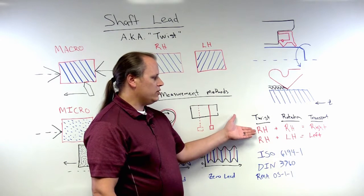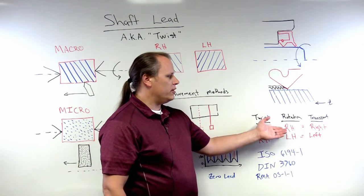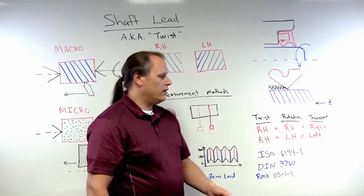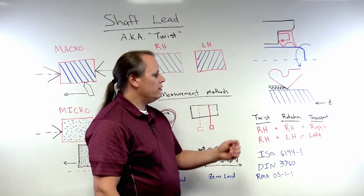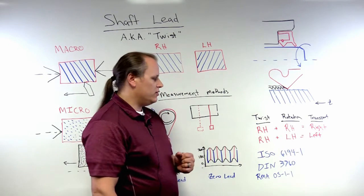So again, right-hand twist, right-hand rotation, the transport is to the right. A right-hand twist with a left-hand rotation, the transportation is to the left.